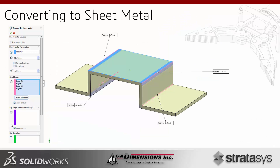The first tool we're going to talk about is Convert to Sheet Metal. Using this tool, all we have to specify is a single face and then select our edges. In the sheet metal parameters, we select the face that's going to stay fixed — everything else bends up and around it. We then specify the thickness; it actually reads the geometry and uses the thickness of that geometry, assuming it's a uniform thickness part. Then we specify the radius.